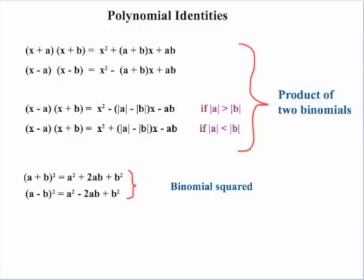We also have our binomial squares. a plus b all squared would be a squared plus 2ab plus b squared. And a minus b all squared would be a squared minus 2ab plus b squared.